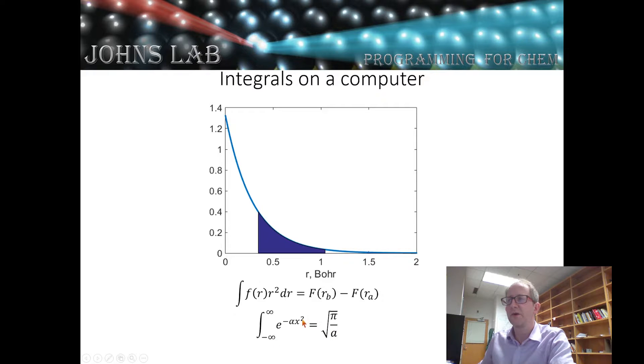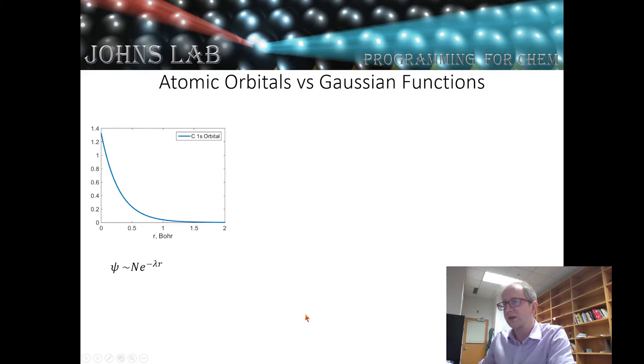So orange is the best fit Gaussian to this exponential. And we notice that it's rounded up here. It doesn't capture the electronic wave function near the nucleus. It's not peaked like it should be. And it decays too quickly in the long distance part. So it doesn't really give us the right behavior.